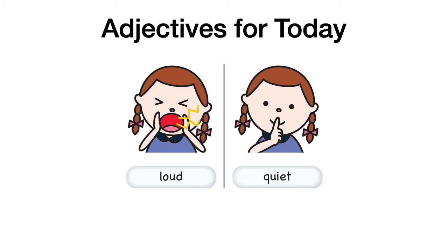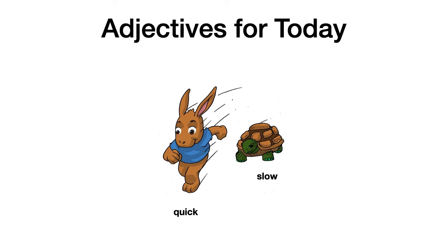So next, we've got quick, slow. The rabbit is quick and the turtle is slow. Quick: rápido. Slow: lento. ¿Ya te sabes la historia del conejo y la tortuga? — the bunny or the rabbit and the turtle. Quick: rápido. Slow: lento.